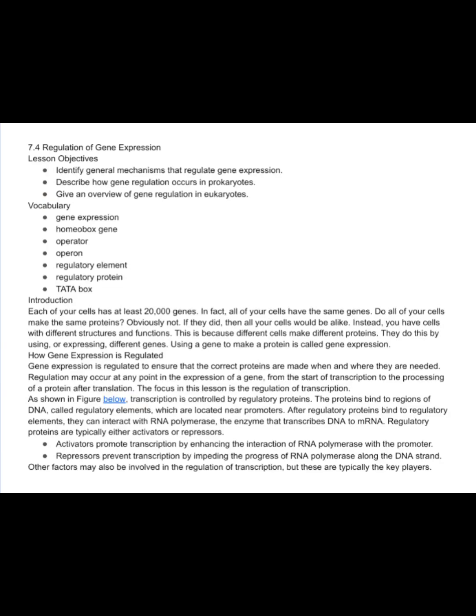7.4 Regulation of Gene Expression. Lesson Objectives: Identify general mechanisms that regulate gene expression. Describe how gene regulation occurs in prokaryotes. Give an overview of gene regulation in eukaryotes. Vocabulary: Gene Expression, Homeobox gene, Operator, Operon, Regulatory element, Regulatory protein, TATA box.